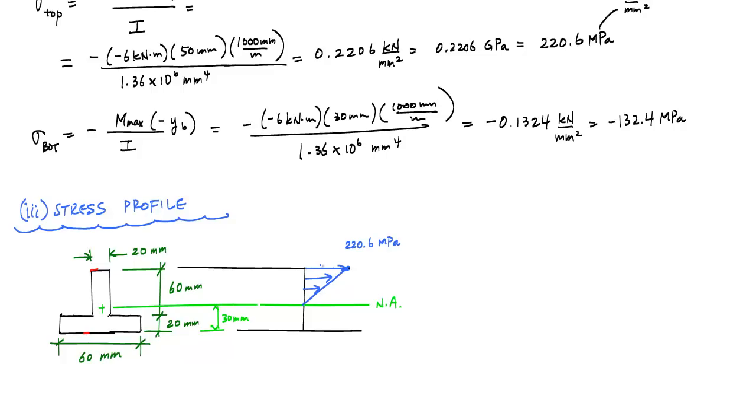At the very bottom, I have negative 132.4 in compression, which means I have 132.4 megapascals in compression. I am compressing the surface. And these two lines should have the same slope. So technically, I should be able to continue this, and it should look exactly the same. This is 132.4 megapascals, my stress profile.